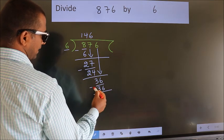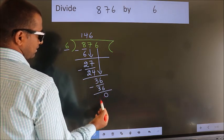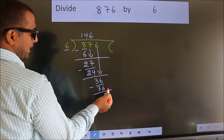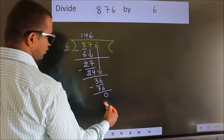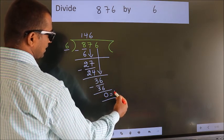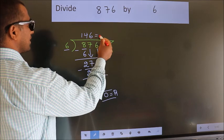Now we subtract. We get 0. No more numbers to bring it down. So we stop here. This is our remainder. This is our quotient.